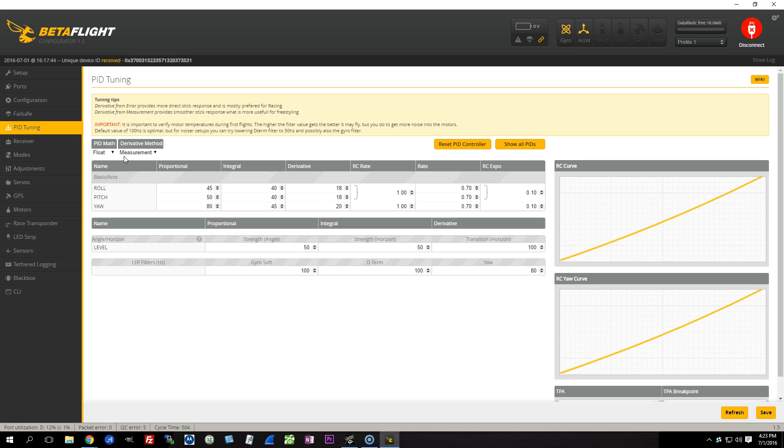It's been suggested by Boris that maybe racers would prefer derivative from error, and maybe acro flyers would prefer derivative from measurement, but of course, everybody's different and everybody has different preferences.